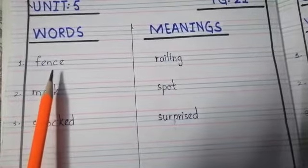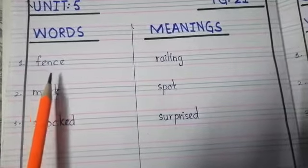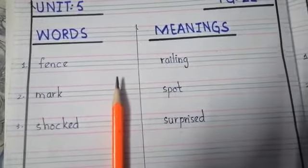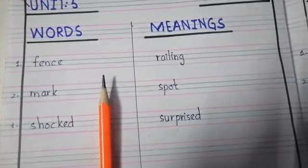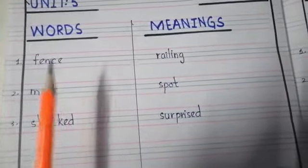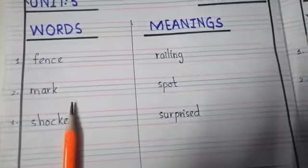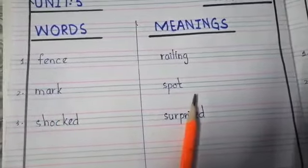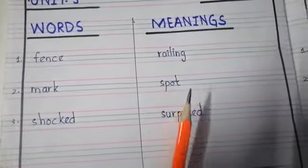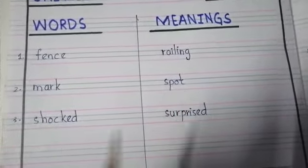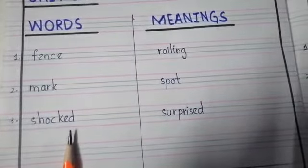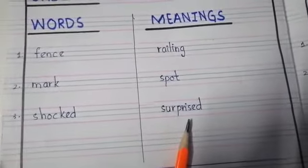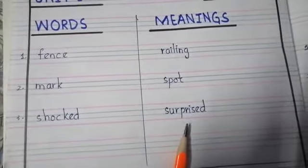So here the first word is fence. Fence means railing. Number two, mark. Mark means spot. Spot, nishan. Number three, shocked. Shocked means surprised. Surprised. Hiran hona.